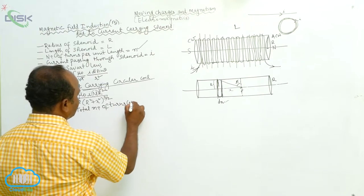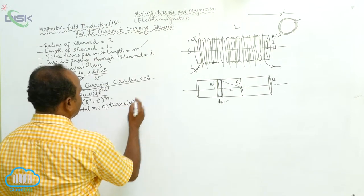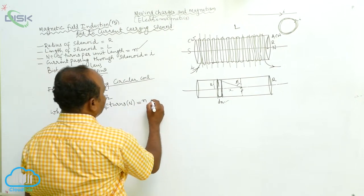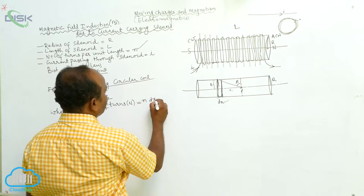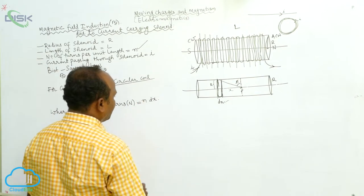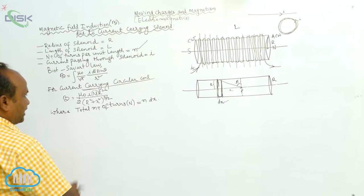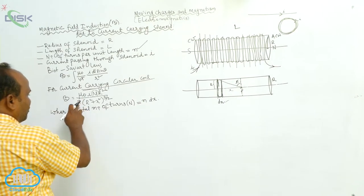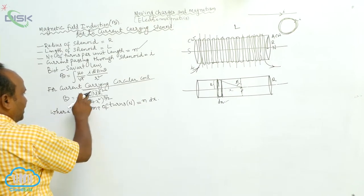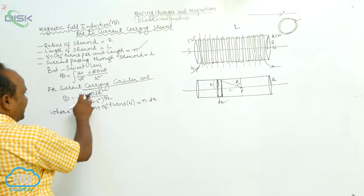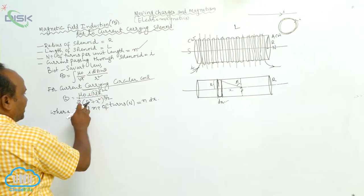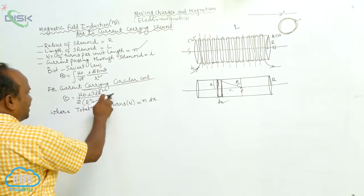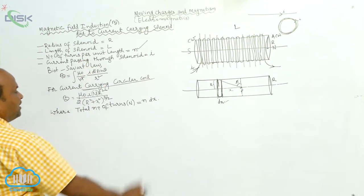n is equal to the number of turns, small n into dx. From the diagram, the magnetic field dB is given by μ₀ by 2π, μ₀ by 2i, into i·r² then r² plus x² whole to the power of 3 by 2.